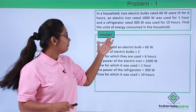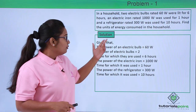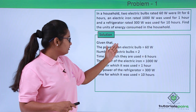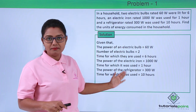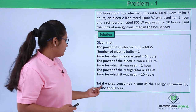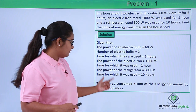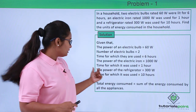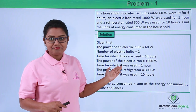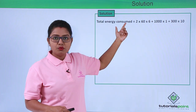We need to find the amount of energy consumed by this household in terms of units. To find the total energy consumed, we calculate the energy consumed by each electrical appliance and then add them up to get the total energy consumed in the household.